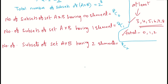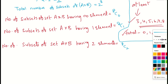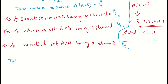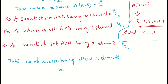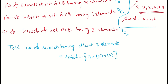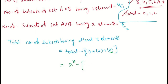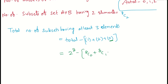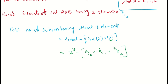The formula becomes: total number of subsets having at least three elements = 2^8 − (8C0 + 8C1 + 8C2). We remove the zero-element case, the one-element case, and the two-element case from the total of 2^8.